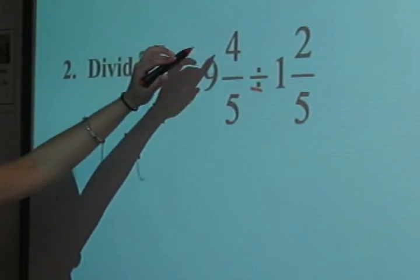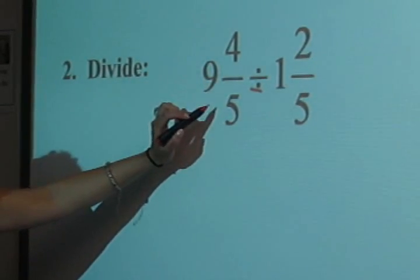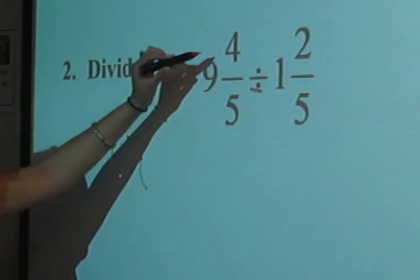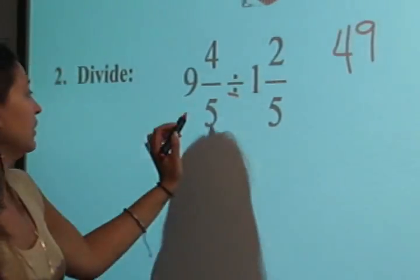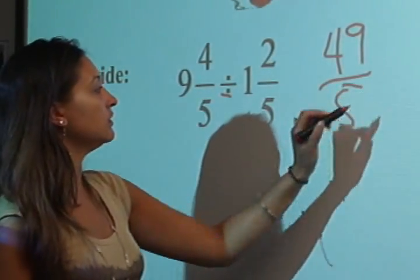So we're going to start by making this an improper fraction. First we're going to multiply 9 times 5 is 45 and add 4, which is 49. Then we're going to bring over our denominator.